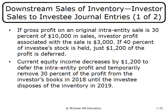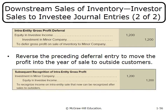For example, if gross profit on an intra-entity downstream sale is 30% of $10,000 in sales, the investor's profit is $3,000. If the investor holds 40% of the investee's stock, only $1,200—40% of $3,000—is deferred. The journal entry debits Equity in Investee Income $1,200 and credits the Investment account $1,200. This is reversed the following year when the investee sells the inventory to an outside party.